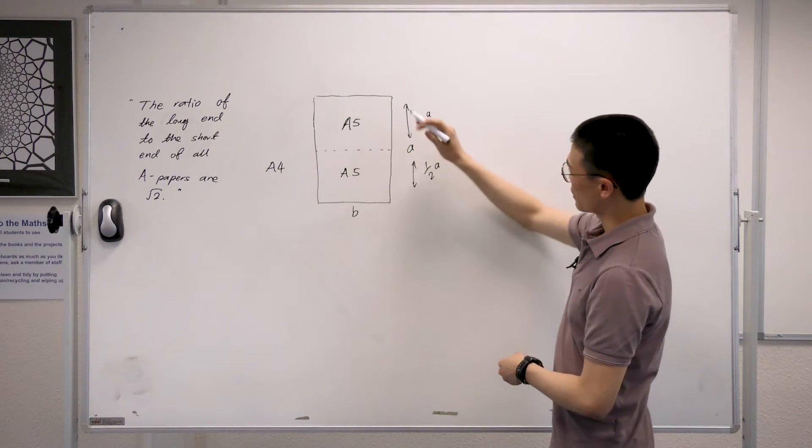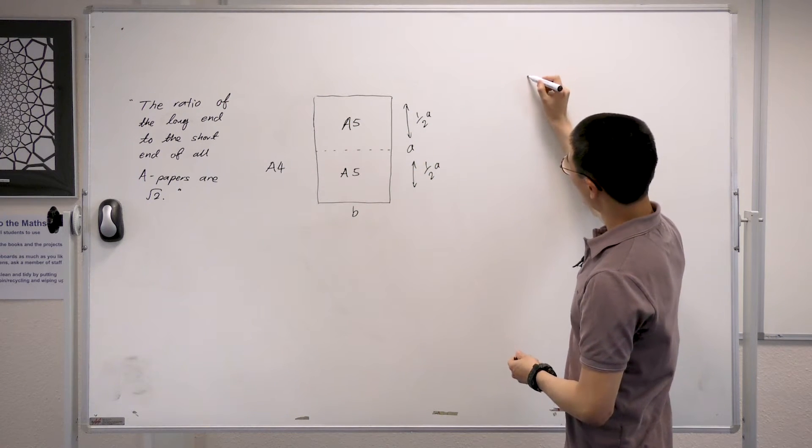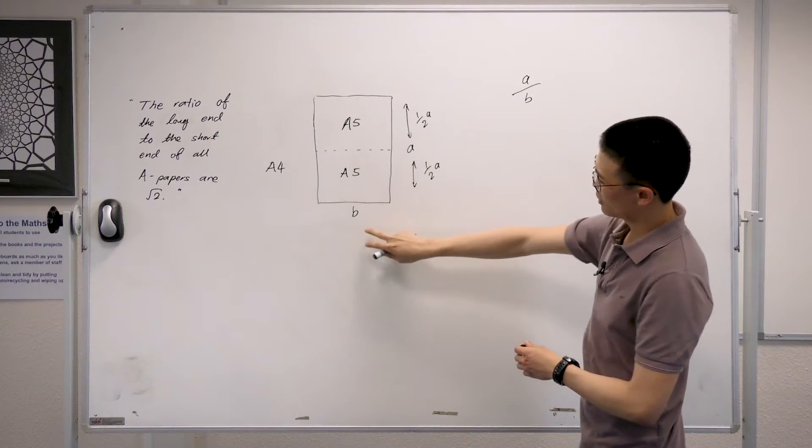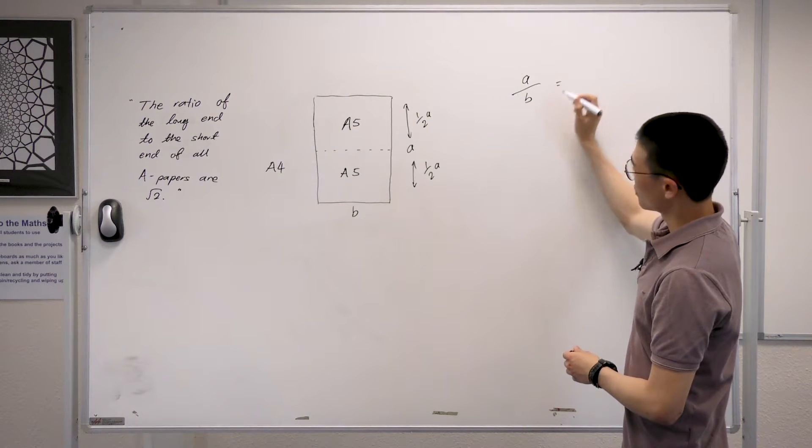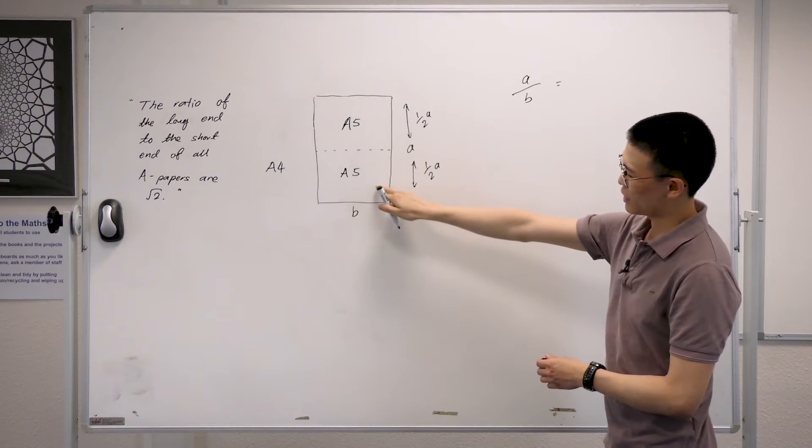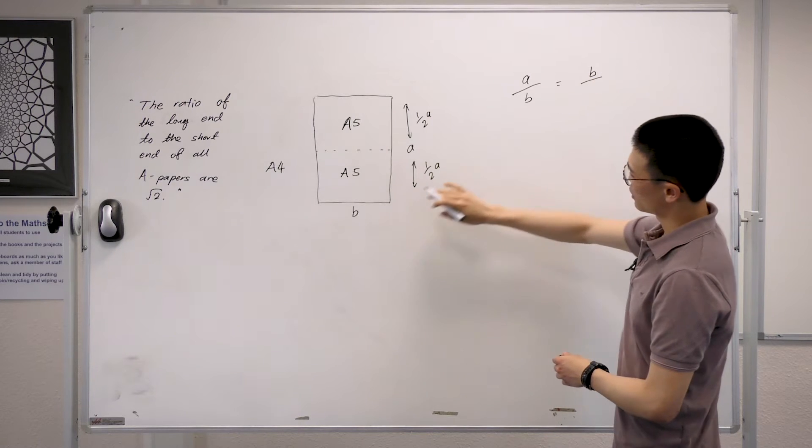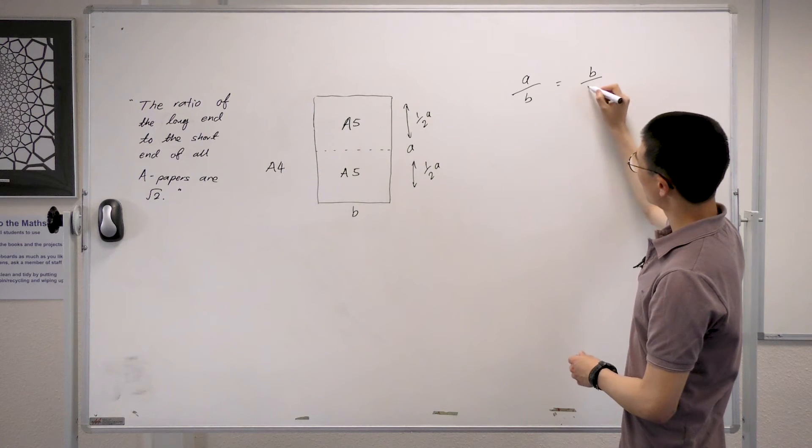You can see that the ratio for the A4 sheet of paper, this whole thing over here, where the long end A over the short end B, will be the same as the ratio between this A5's long end, which is B now, over the short end, which is half of A from the diagram.